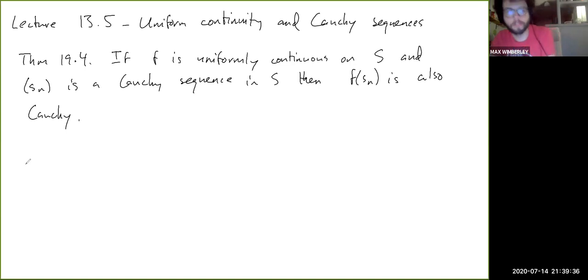Right, so this is really not too bad. So basically, we want to show that F of SN is also Cauchy. So let's just go straight to the proof here. To show that it's Cauchy, we have to let epsilon be greater than zero.